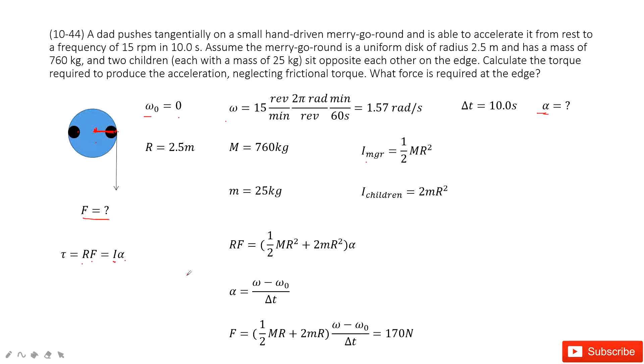Now the total I equals, add them together. Now we look at this equation: RF equals this moment of inertia for the system times α. And α can be found there.